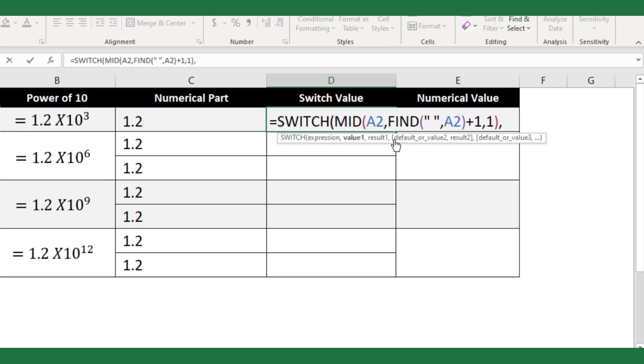Next, for the value 1 argument, if K, switch result argument will be 3. Next, value 2 argument, if M, the switch result argument will be 6. I will continue the same till switch value reach 12 for billion and trillion values.